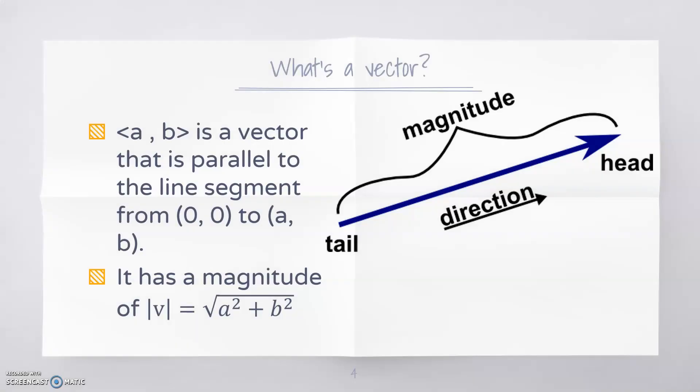Vectors have magnitude and direction, but they don't necessarily have position. If you have a vector a comma b, it's parallel to the line segment that goes from 0,0 to a,b, but it could be anywhere in the plane.